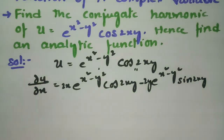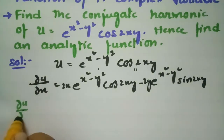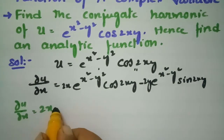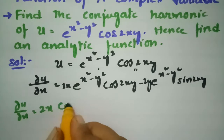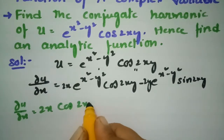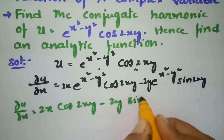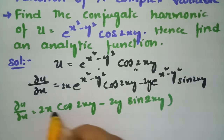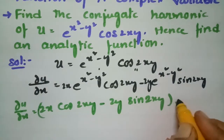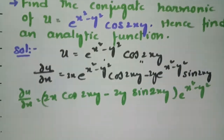So ∂u/∂x is equal to 2x·cos(2xy) minus 2y·sin(2xy), all multiplied by e^(x²-y²).